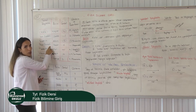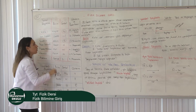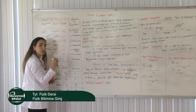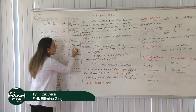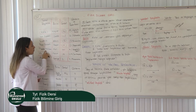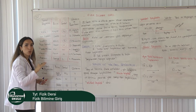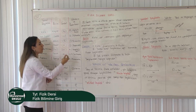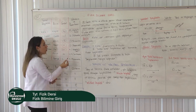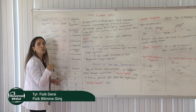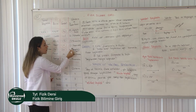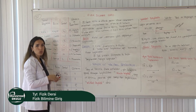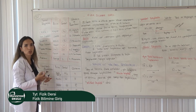Akım şiddetinin birimi amperdir, büyük A harfi ile gösterilir. Sorularda küçük i harfini görünce akım olduğunu anlayabiliriz. Akımı ampermetre ile ölçeriz. Madde miktarının birimi moldür, kitaplarda küçük n harfi ile gösterilir. Molün herhangi bir ölçüm aleti yoktur; biz hesaplama yaparız. Bunu kimya dersinden de hatırlıyor olabilirsiniz.